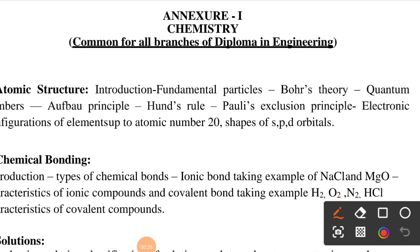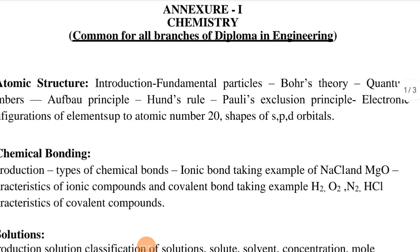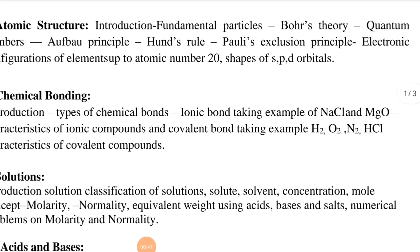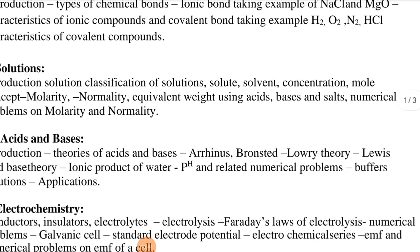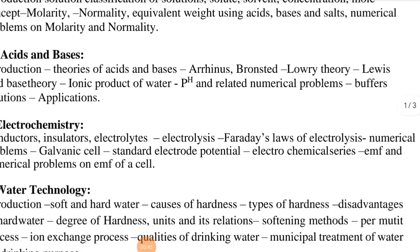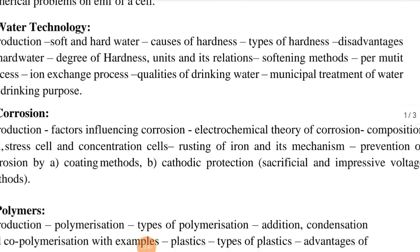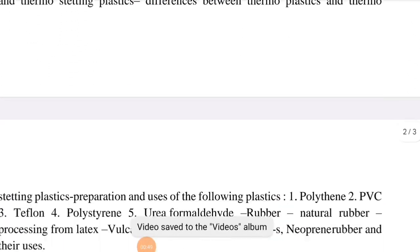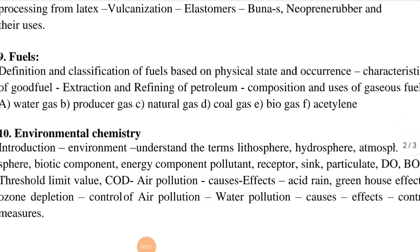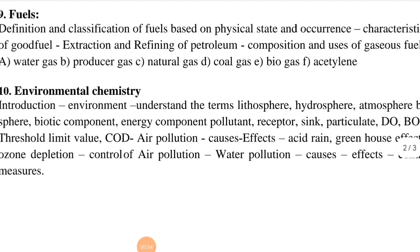So in chemistry, topics include atomic structure - covering fundamental particles, Bohr's theory, and quantum numbers. From atomic structure you can understand the shape. Chemical bonding, solutions, acids and bases, electrochemistry, water technology, corrosion, polymers, fuels, and environmental chemistry - so these are 10 topics in chemistry.